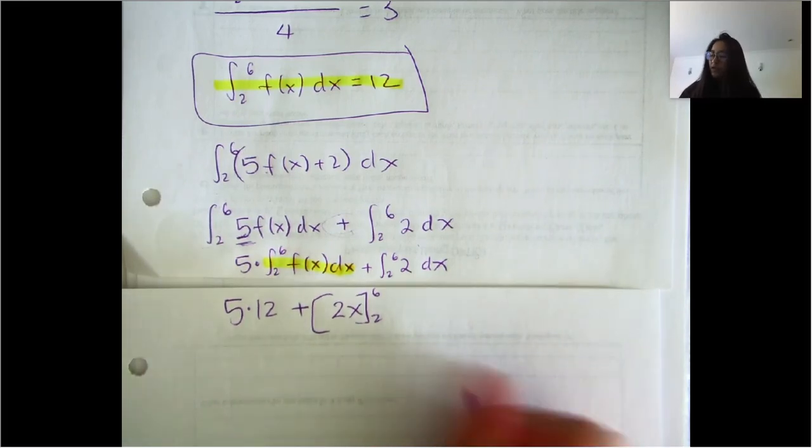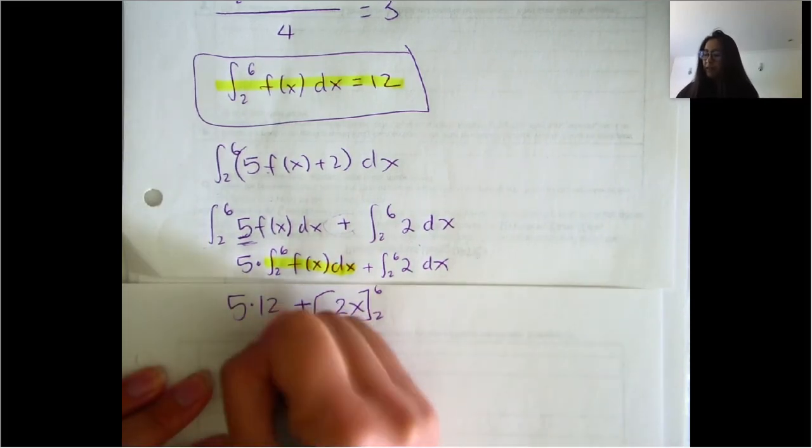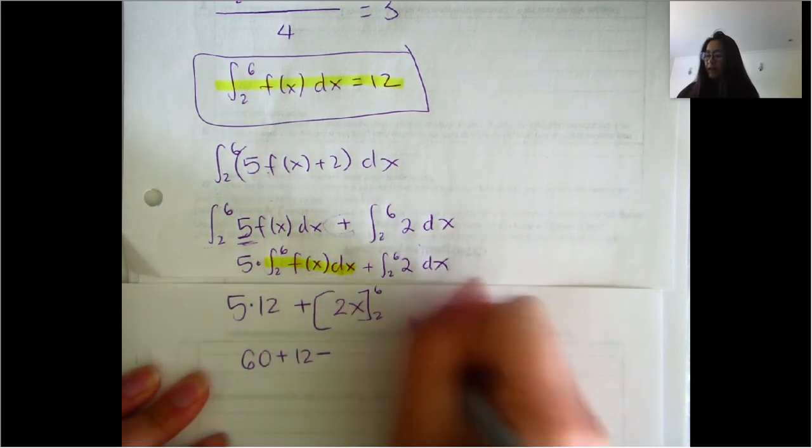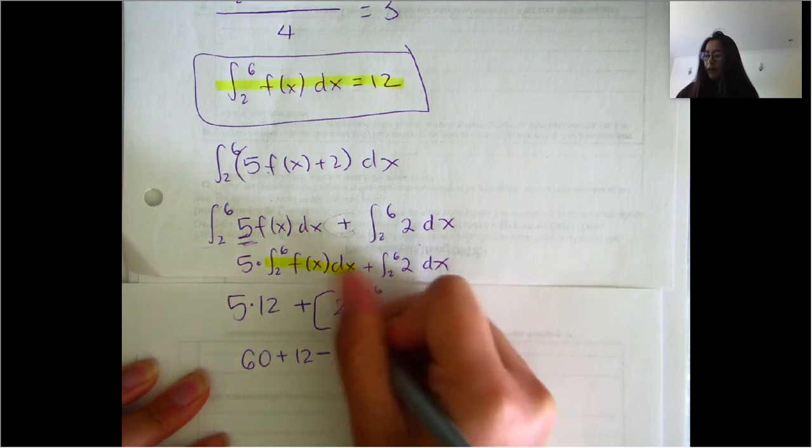And then we plug in six and two. So we have five times 12, that's 60 plus, and then we plug in six, it's 12 minus, and then we plug in two, and we get four.